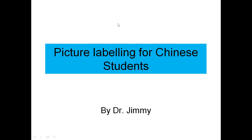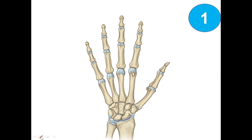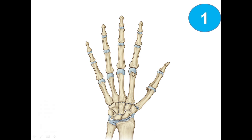Good morning students. Today we are going to have picture labeling for Chinese students. The first picture in front of us is the hand, in which we can start from the forearm bones.